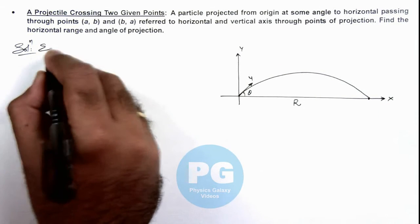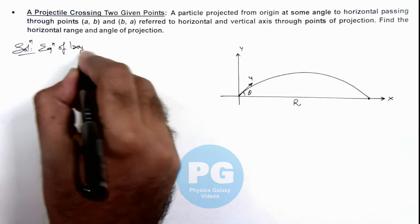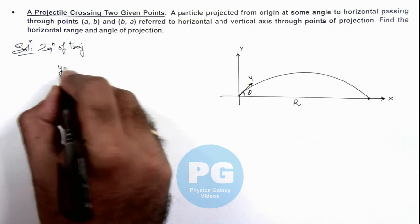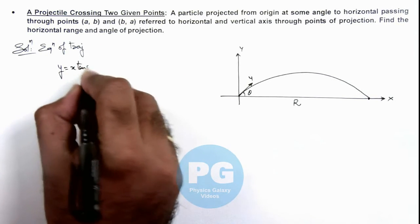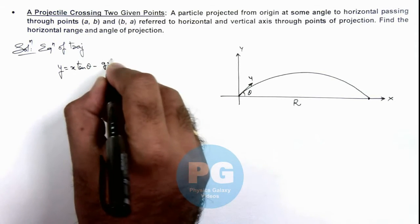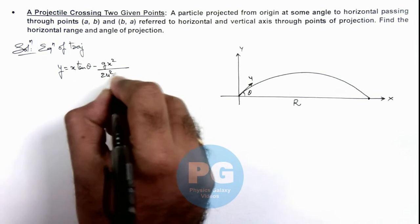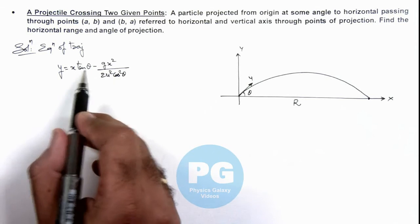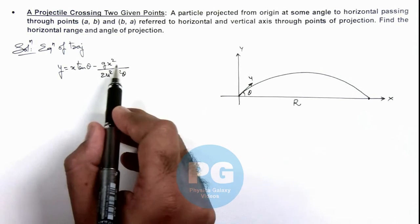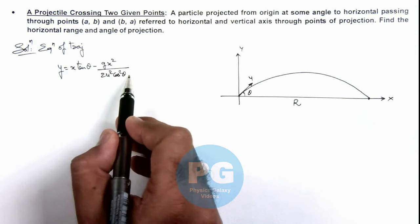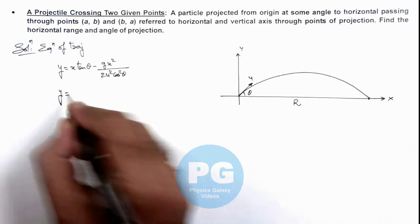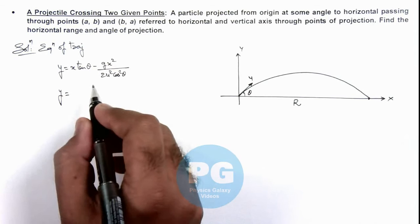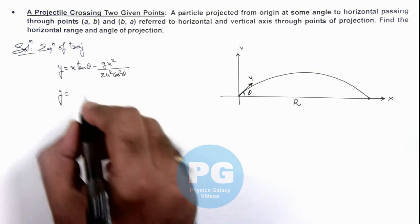the particle is y equals x tan theta minus g x squared by 2 u squared cos squared theta. Here if we take this tan theta common out we have to multiply it by sine theta, by sine theta, and the result can be re-expressed. This equation of trajectory can be re-expressed as